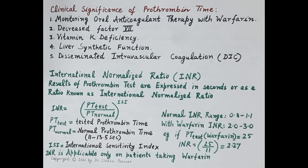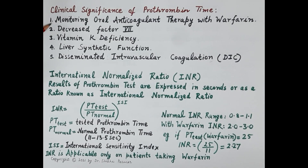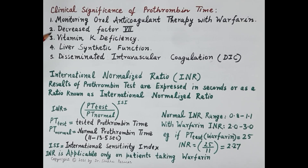Now let's discuss the clinical significance of prothrombin time. The first and most important use is monitoring of oral anticoagulant therapy with warfarin — whenever a patient is on warfarin, it is essential to determine prothrombin time. A decrease in the synthesis of clotting factor 7 increases the prothrombin time.